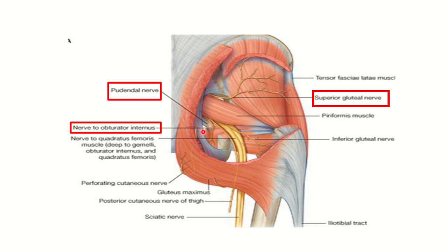Here we can also see some other structures: the pudendal nerve, which is important in the perineal and rectal region; the nerve to obturator internus; and the large sciatic nerve. We can also see the inferior gluteal nerve, which lies below the piriformis. So, above the piriformis is the superior gluteal nerve, and below the piriformis is the inferior gluteal nerve. The gluteus medius is supplied by the superior gluteal nerve.